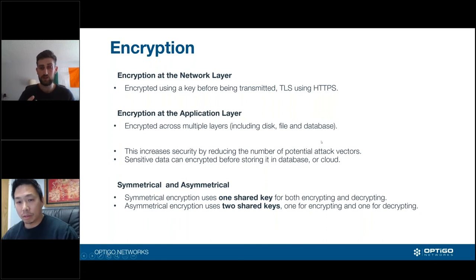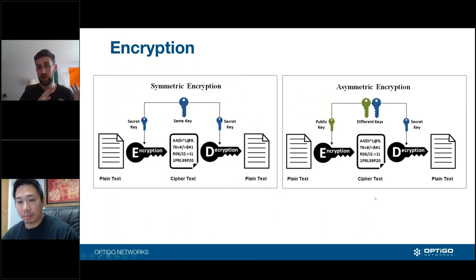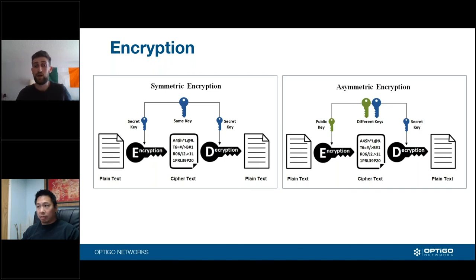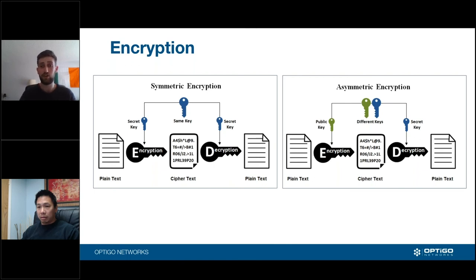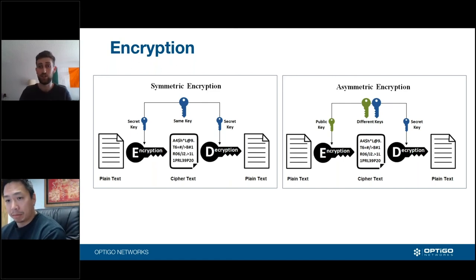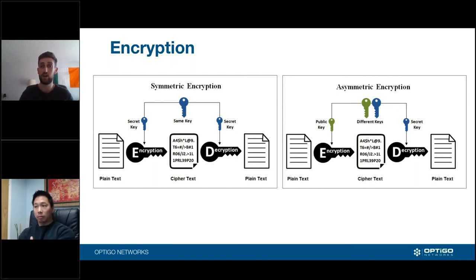With symmetric encryption, both users share a pre-established key used for both encrypting and decrypting. With asymmetric encryption, there's an extra layer of security: a secret private key known only to the receiver, and a public key used for encrypting. Anyone can encrypt information with the public key, but only the holder of the private key can decrypt it, making it much harder for the key to be shared or compromised.